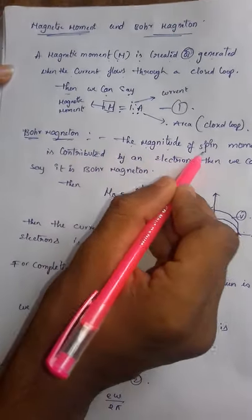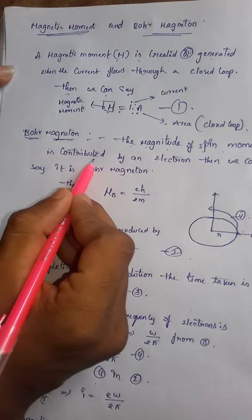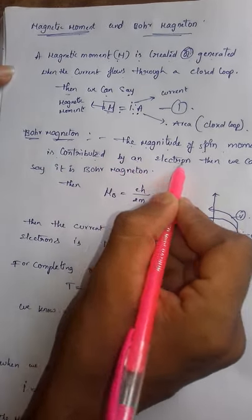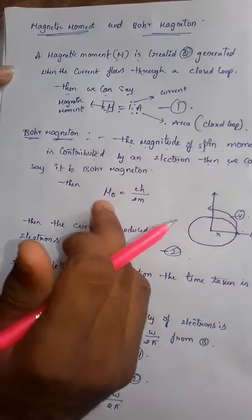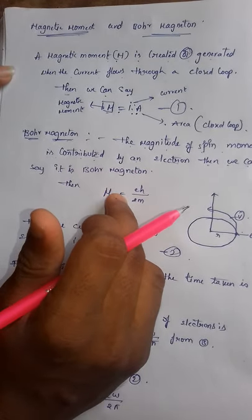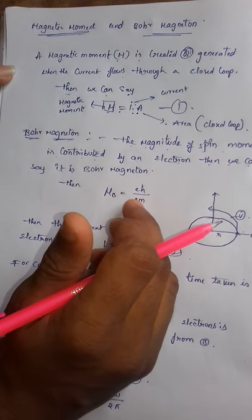The Bohr magneton is the magnitude of spin moment contributed by an electron. We can say Bohr magneton μb equals to E h by 4πM.